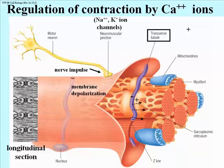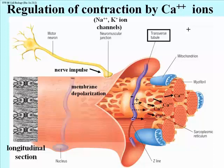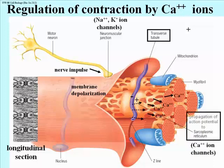The propagation of that depolarization continues into the sarcoplasmic reticulum, where there is an opening of calcium channels and a release of calcium which now bathes the contractile proteins — the actin and the myosin. The ion channels that open up will later serve to recapture the calcium after contraction is over.